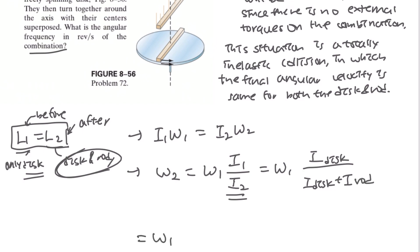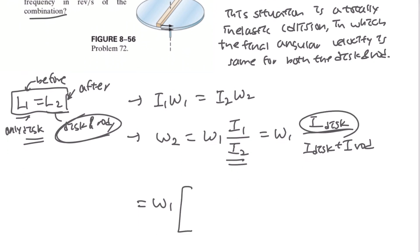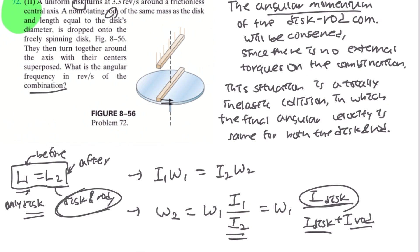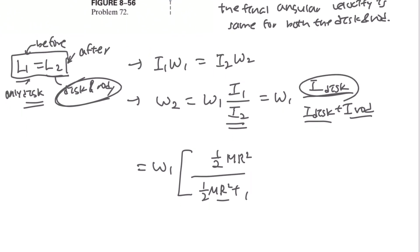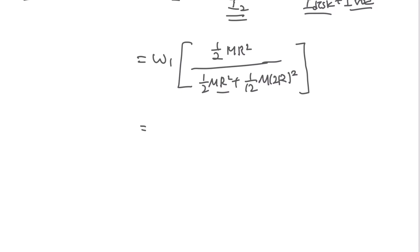And this would be omega1, the initial rotation inertia of the disc would be found as 1/2 MR^2, and from the rod it would be 1/12 M, and for the R it is said that the length is equal to the diameter, so it would be 2R squared.